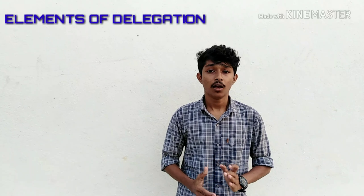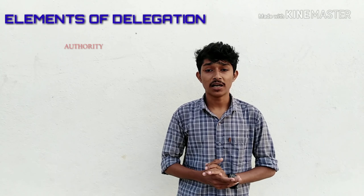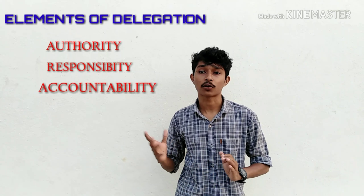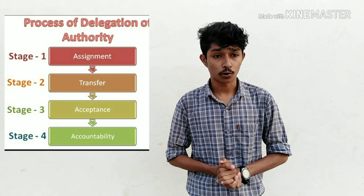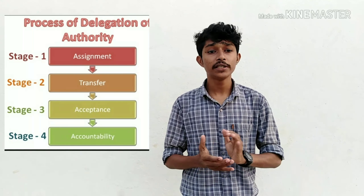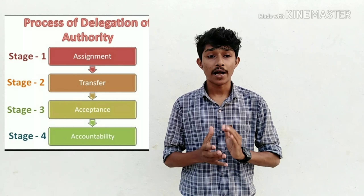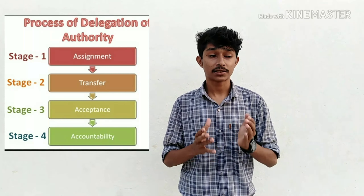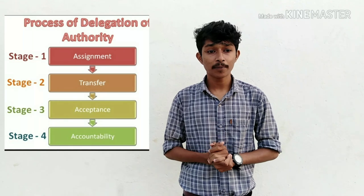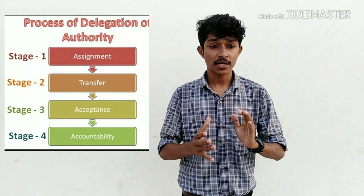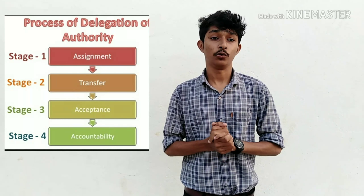The elements of delegation can be classified into three types: authority, responsibility, and accountability. Authority always flows from top to bottom. Authority is the right to give commands, orders, and get things done. The top level management has the greatest authority.